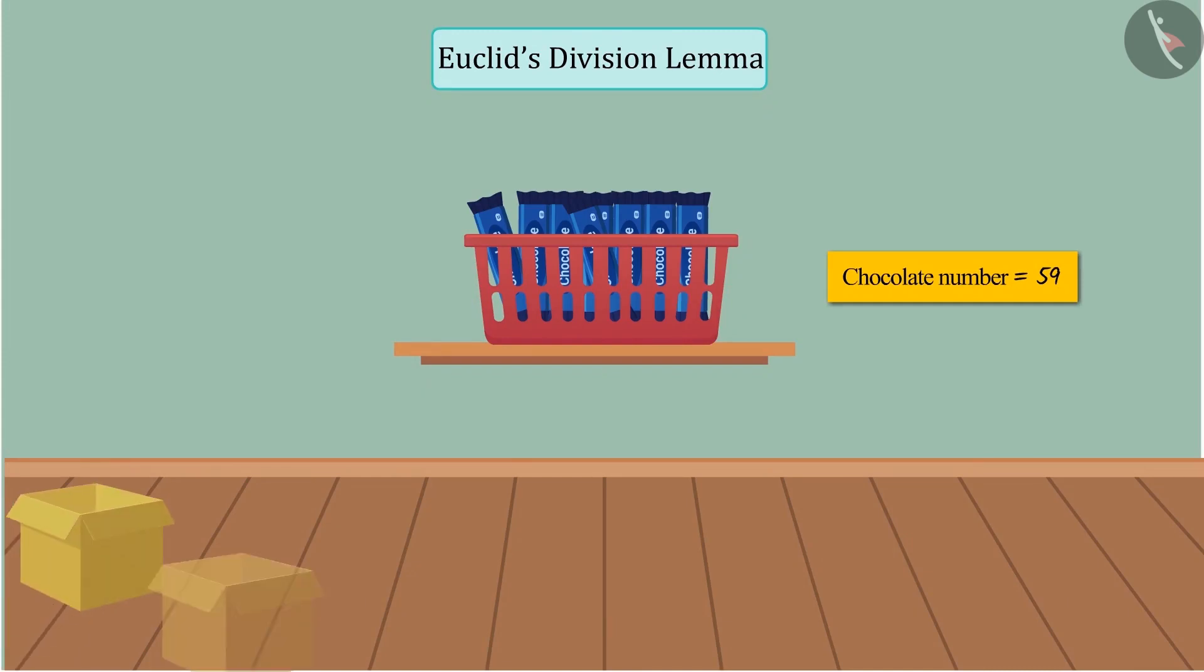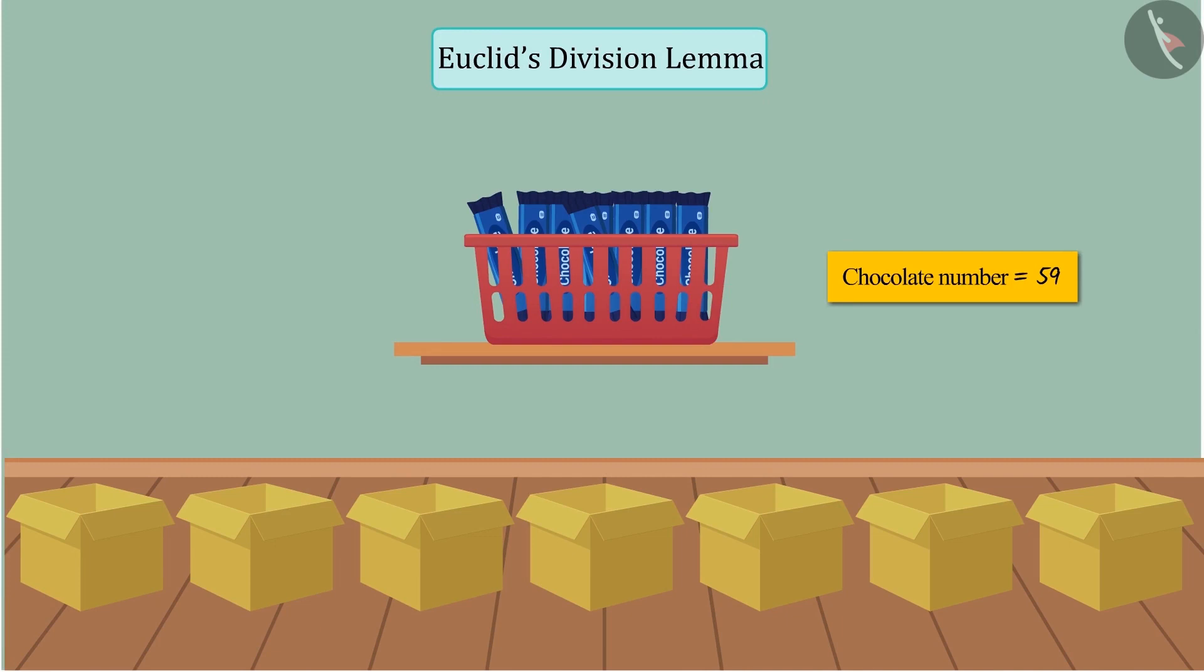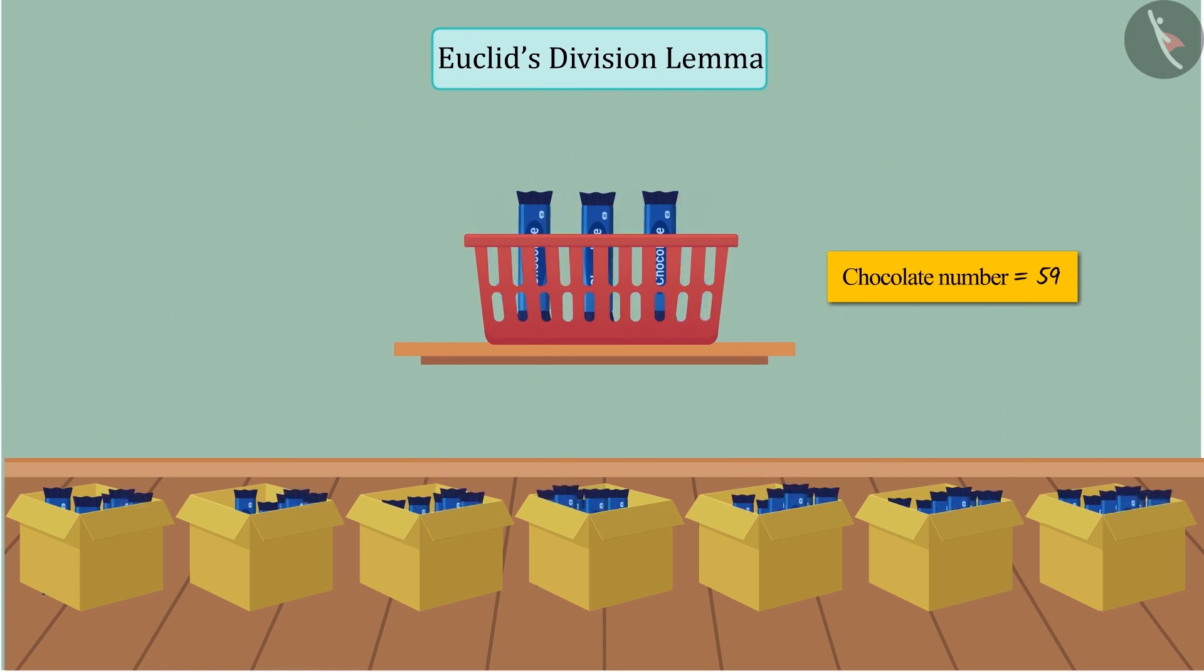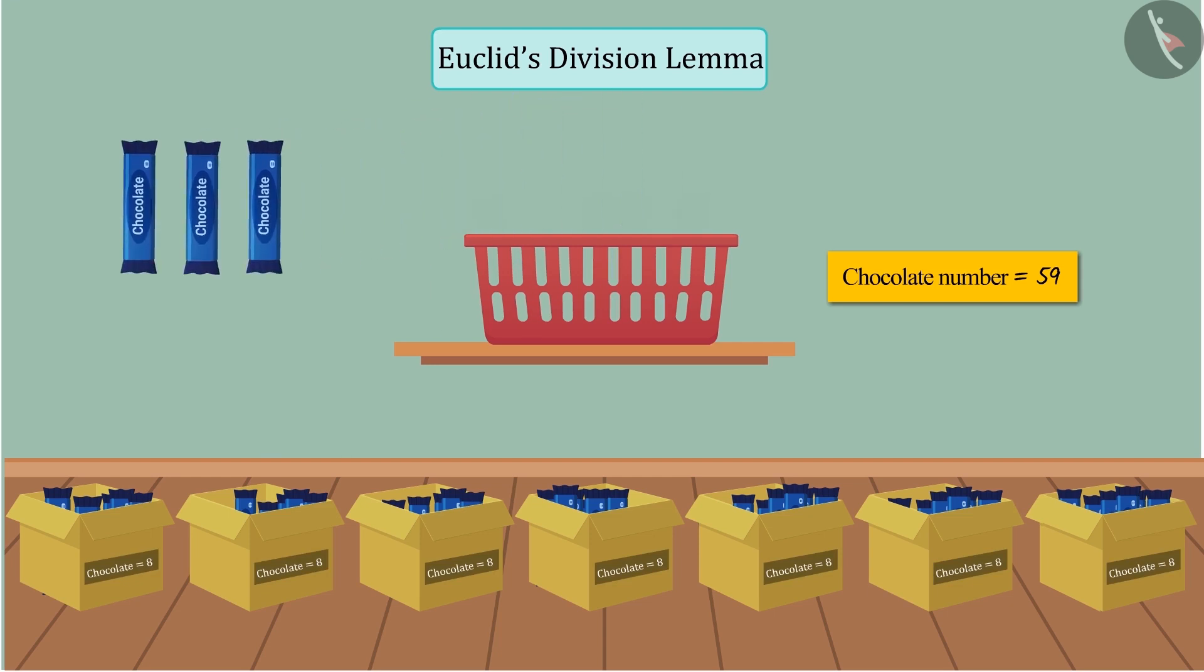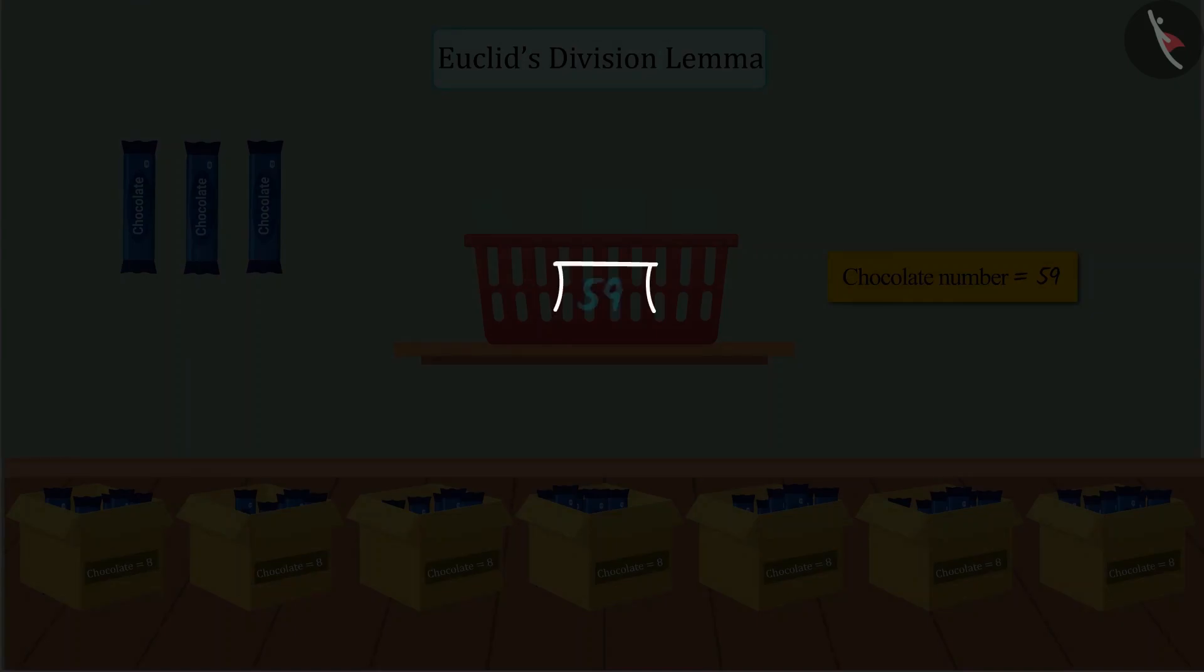Well done! Similarly, if the number of boxes is increased to 7, we see that each box contains 8 chocolates, while 3 chocolates remain, which we represent like this.